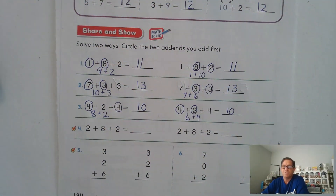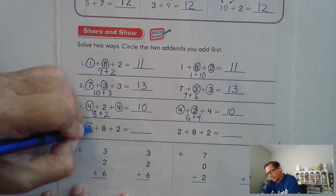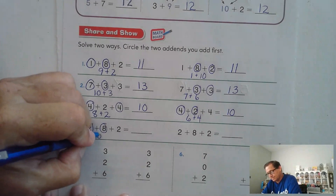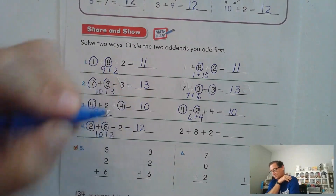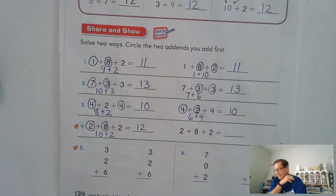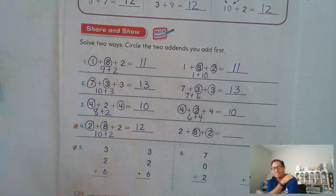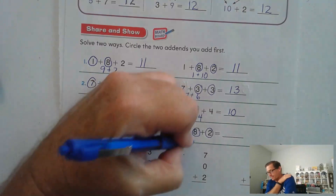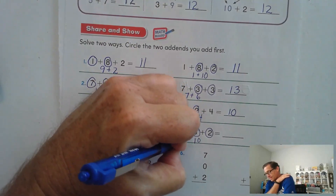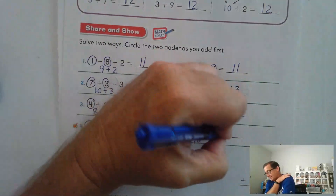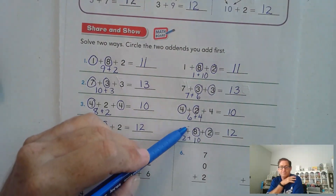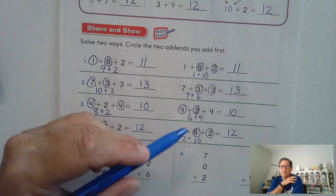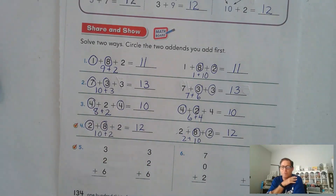Two plus eight plus two is ten plus two. We still have eight plus two if we go that way — we just have two plus ten, and that's still twelve. Could you have combined the twos and added eight to the sum of two plus two? Yeah. You could have done four plus eight.